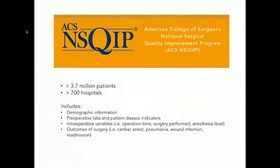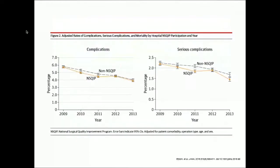There's something called the NSQIP dataset — the National Surgical Quality Improvement Program — which is collected nationally. It involves over 3.7 million patients and 700 hospitals, and includes demographic information and operative variables. There was a JAMA article recently noting that just belonging to this NSQIP program wasn't enough to actually improve your complication rates — you have to actually use the data for something.